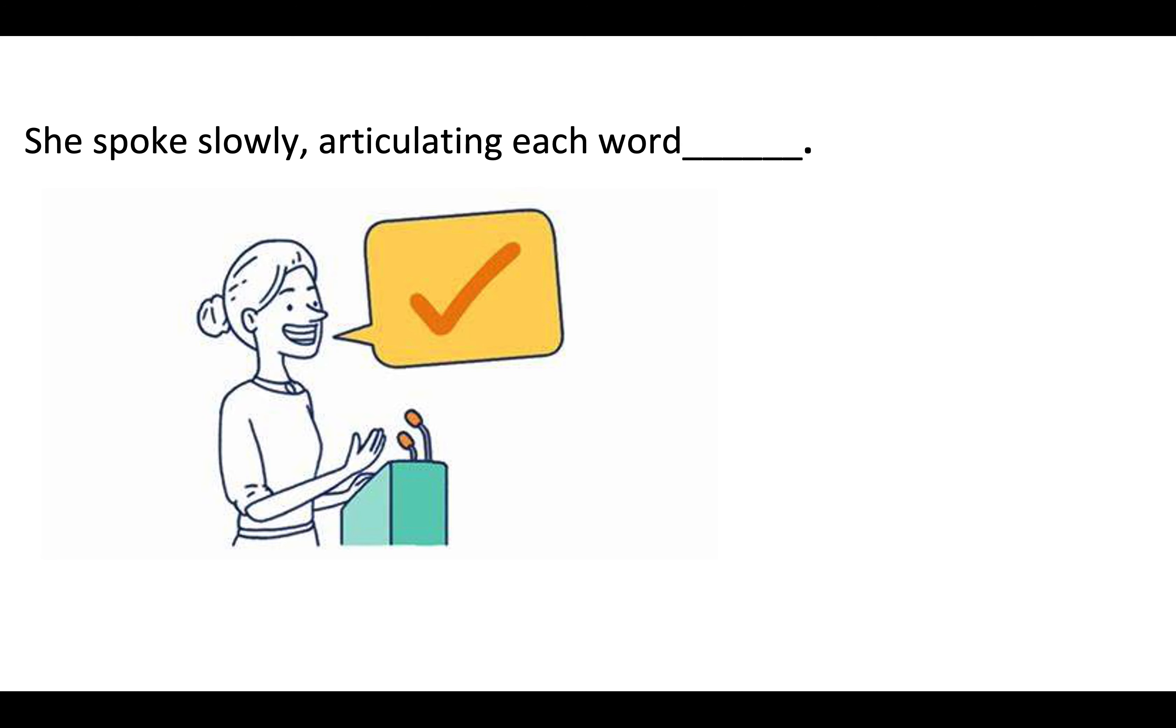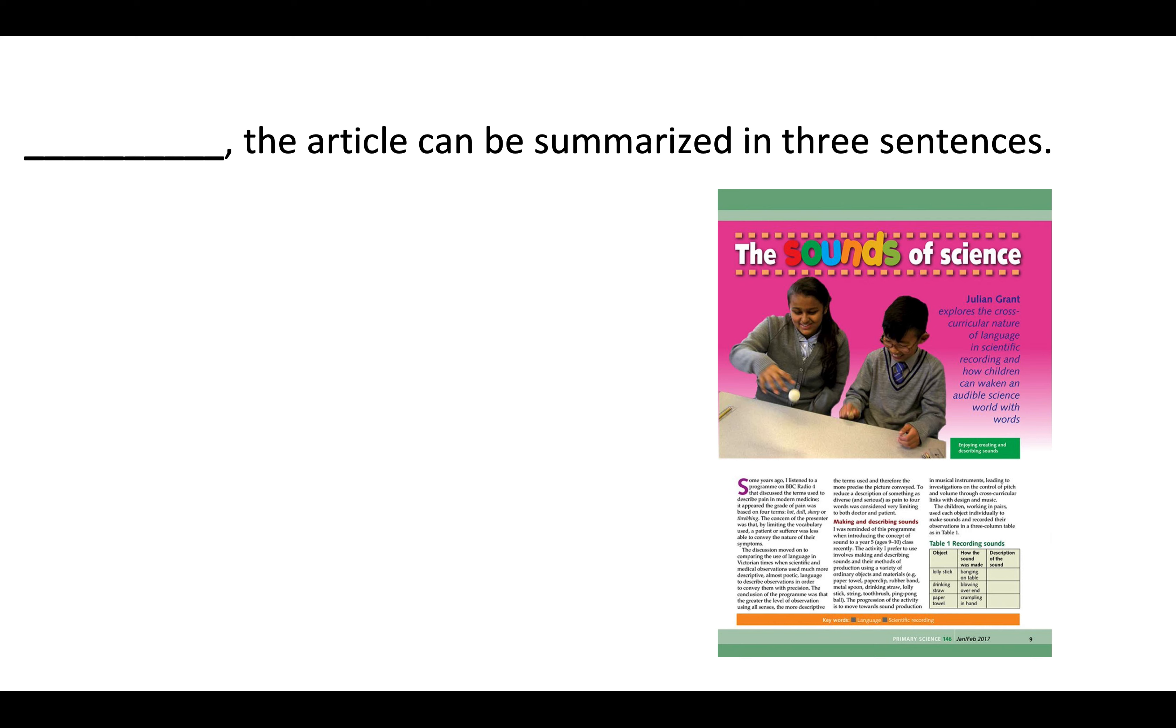And finally, spelling number eight, the word is basically. Basically, the article could be summarised in three sentences. The word is basically.